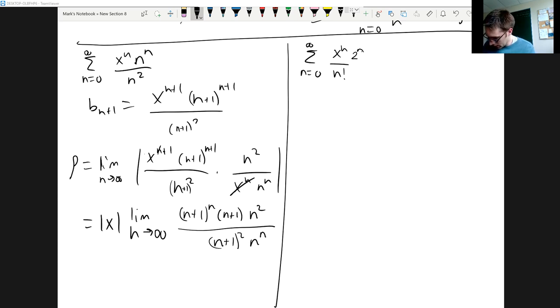At that point I'm going to see that one factor of n+1 is going to cancel, and we will be left with absolute value of x times the limit as n goes to infinity of (n+1)/n to the n, and that's multiplied by n squared over (n+1).